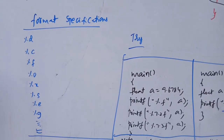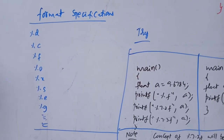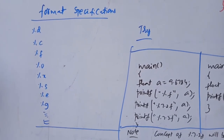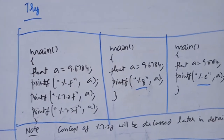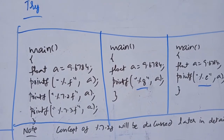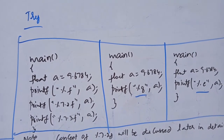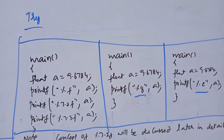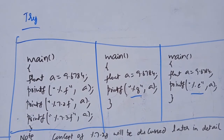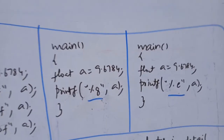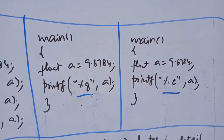Here is the list of format specifications. We already discussed %o for octal, %x for hexadecimal, and %s for string will be discussed later. Look at the demo programs here. The concept of %7.2f and %7.3f will be discussed later in detail, but at this moment just observe the output for all these programs — it will be easily understandable. Here for the first time I also use %g and %e.